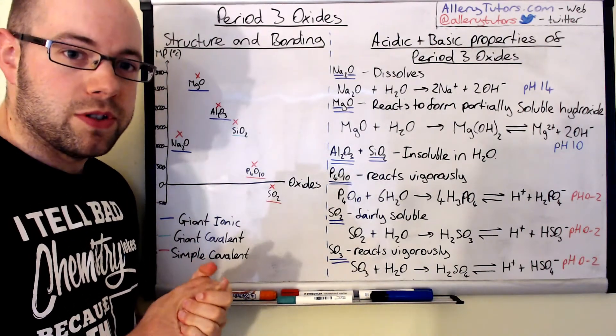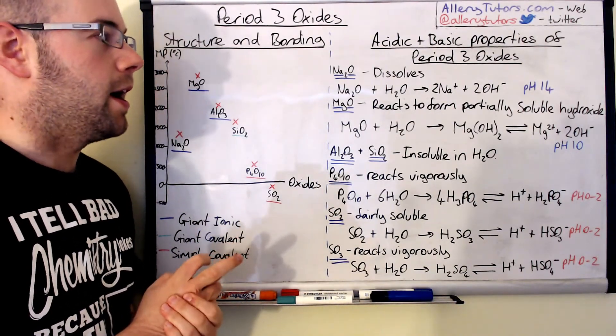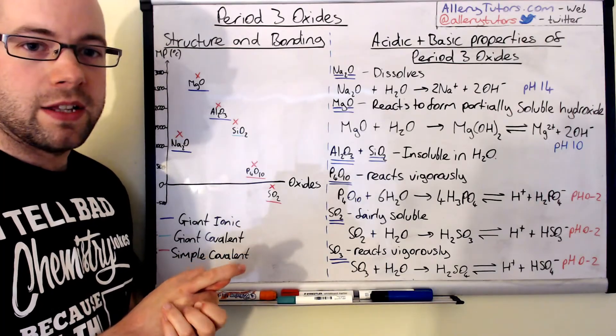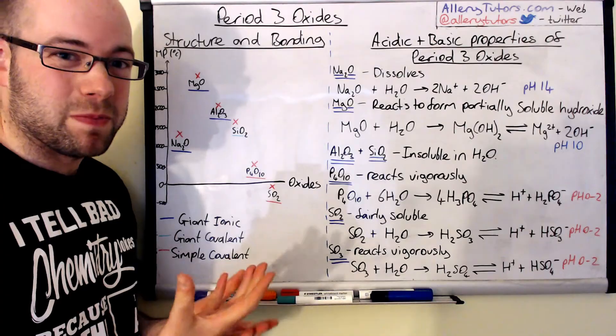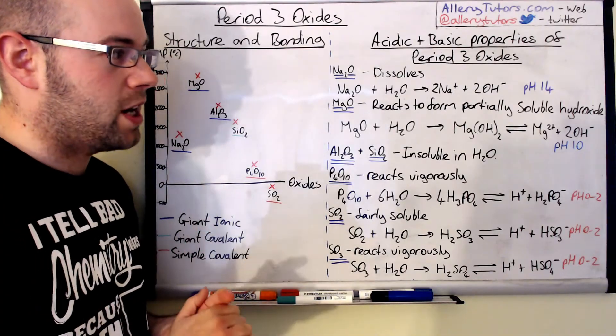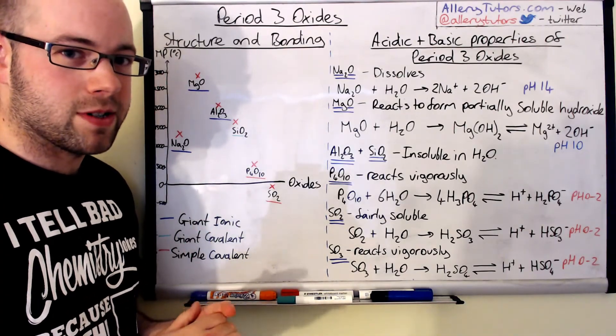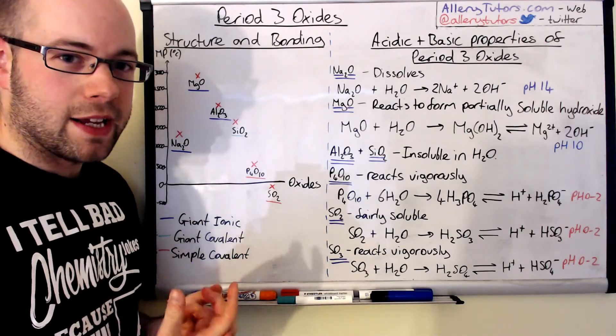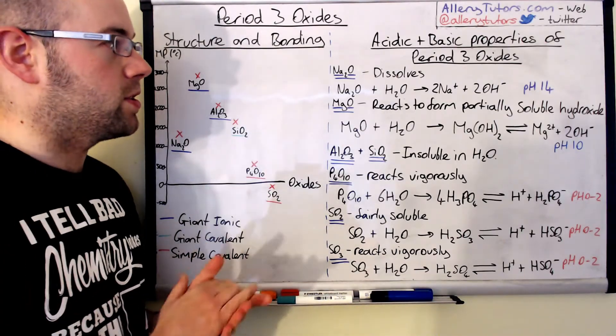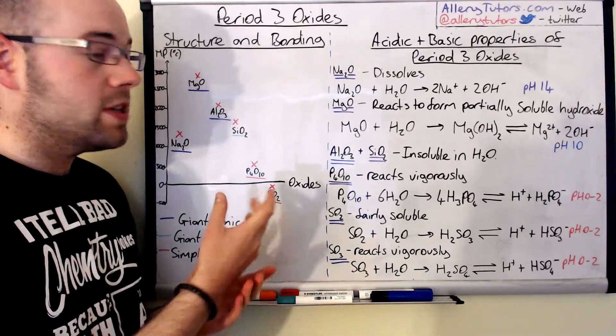Magnesium oxide will do the same, it will react as well. It doesn't react as readily, well it reacts reasonably well if it's partially soluble, but the hydroxide that's formed is not very soluble, and because it doesn't dissolve very well then we don't get as strong base as we do with sodium oxide.